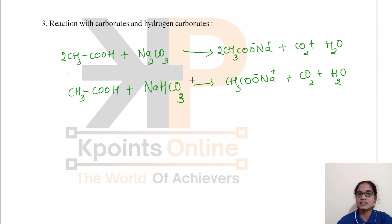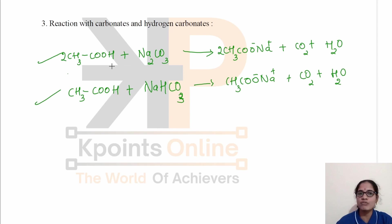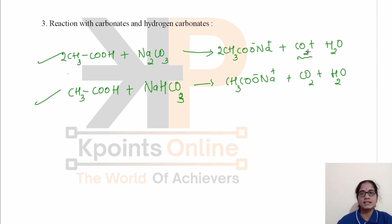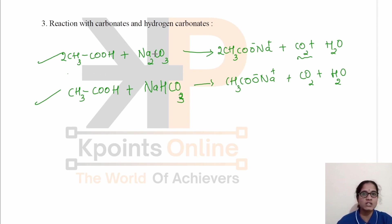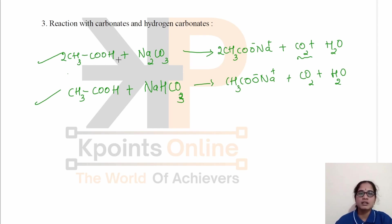Acetic acid also reacts with sodium hydrogen carbonate to form sodium acetate, CO₂, and water. This reaction can be used to distinguish between acids and alcohols: the liberation of carbon dioxide gas confirms the presence of an acid. Alcohols do not give carbon dioxide with sodium carbonate or sodium bicarbonate.